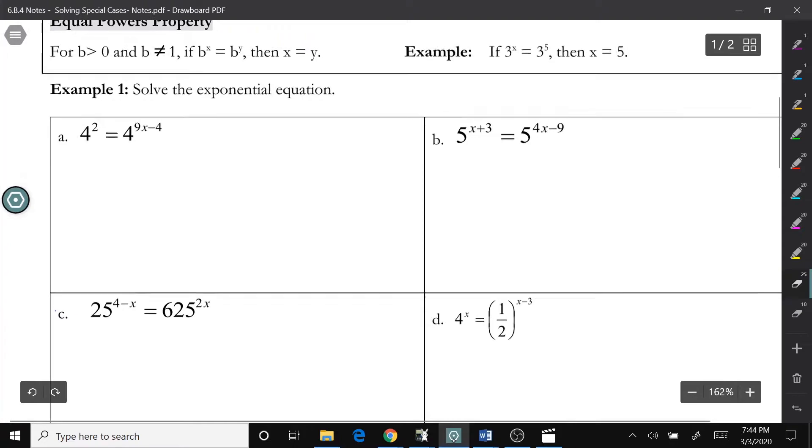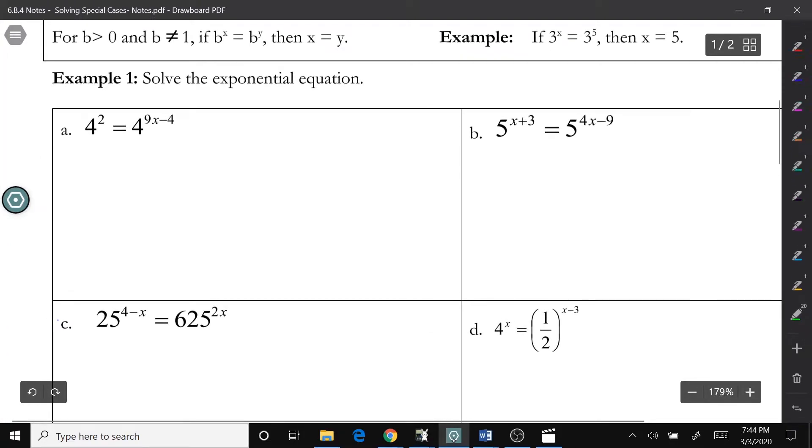Basically what today boils down to is when we have an exponent on both sides. So in example a, we have 4 to the second power equals 4 to the 9x minus 4 power. Our bases are the same, they're both 4. If our bases are the same, that means our exponents are equal. So we can just go right to the equation 2 equals 9x minus 4. And that only works if our exponents are exactly equal.